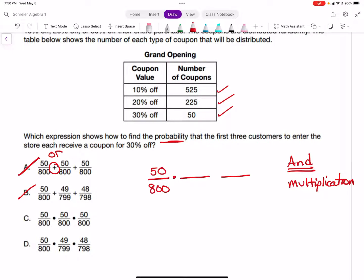Here's why this problem can be tricky: the events aren't independent. When the first customer arrives, there are 50 30% off coupons out of 800 total. Then the next customer comes - we assume the first person got 30% off, so now there are 49 30% off coupons out of 799 people. Then the next person: now 48 out of 798. So the answer choice should be D.